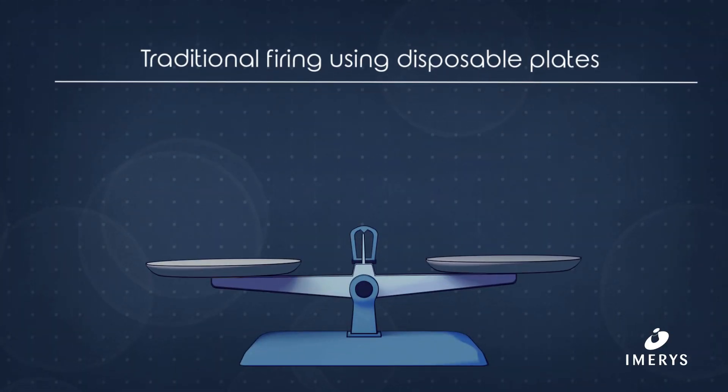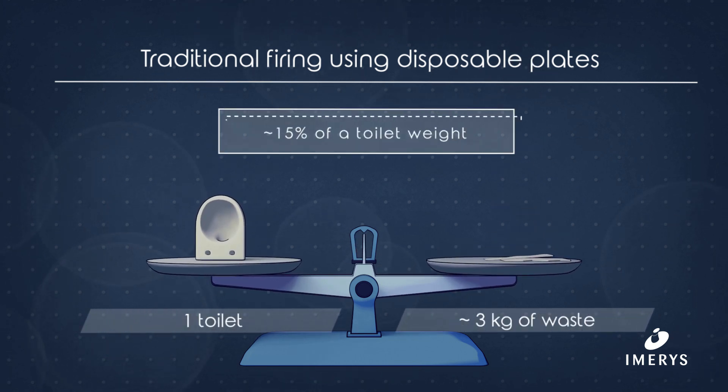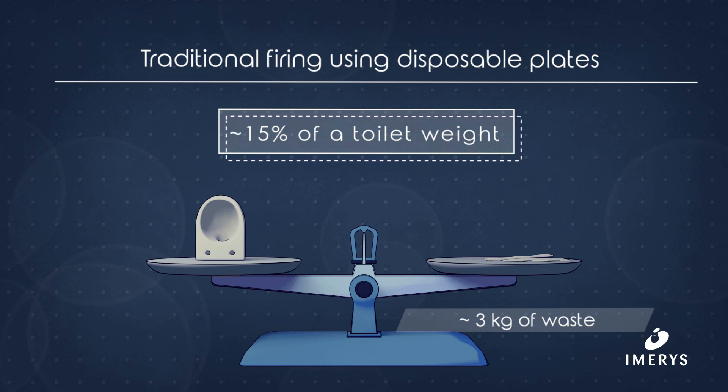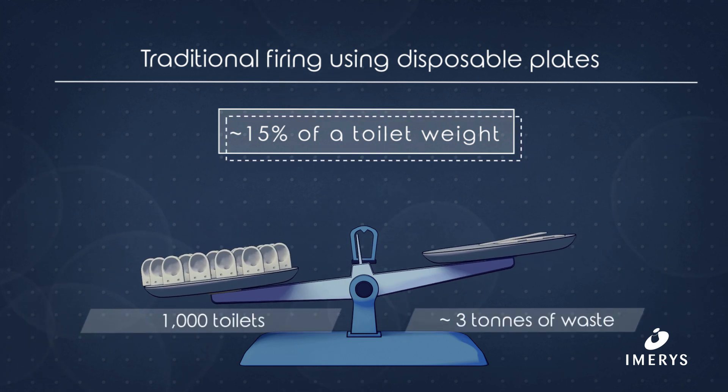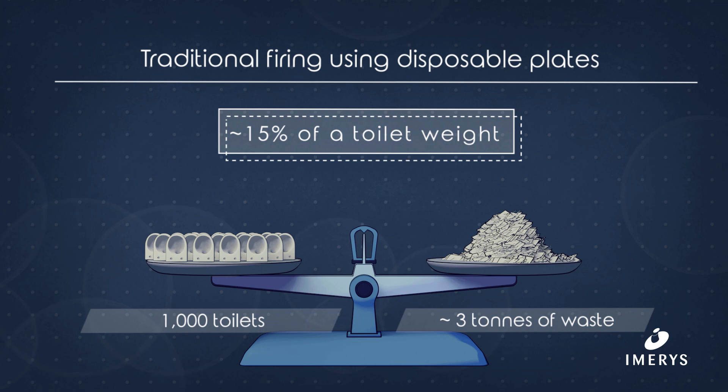Consider the following: using a disposable plate to produce a toilet generates on average 3 kg of waste. For a thousand toilets, that amounts to 3 tons of waste that will need to be disposed of, thus generating costs.